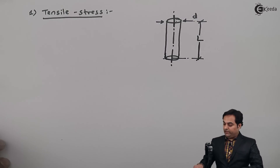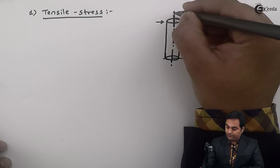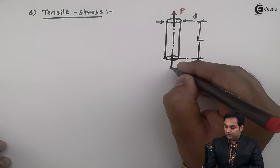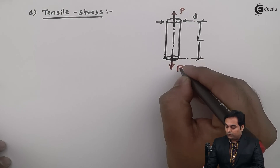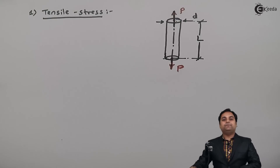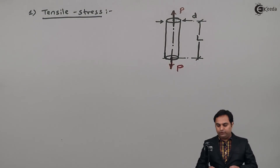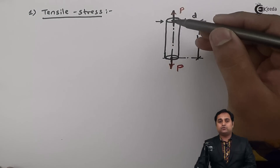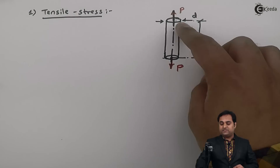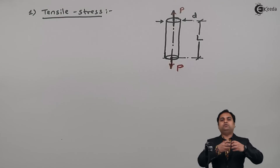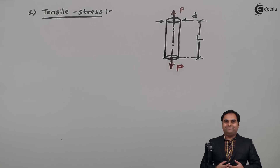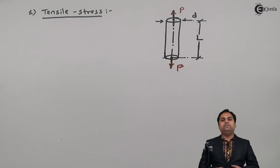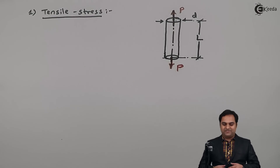When I am applying a load in the upward direction and another load in the downward direction, because of the action of these two opposite loads passing through the axis — for tensile stress the load has to pass through the axis — this load will try to pull the rod. This pulling action is called tensile.